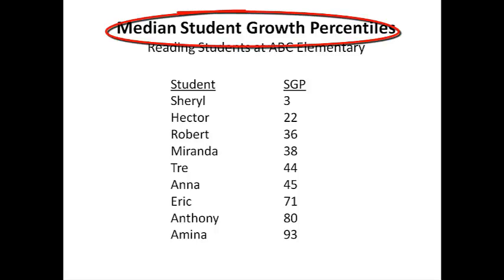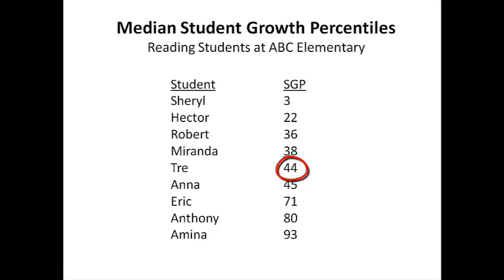So in this chart, assuming this was the total population of the school, the median student growth percentile is 44. It can serve as a single number for describing the growth of a school. An average can be influenced greatly by very high or very low scores, so a median can give a better overall picture for a school. The median SGP shows that half of the students had growth above that level and half had growth below.